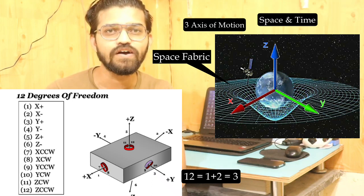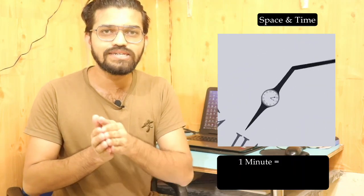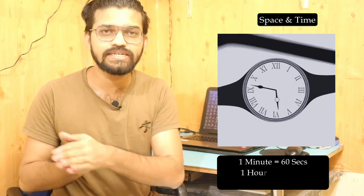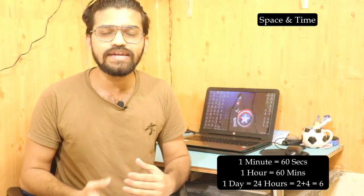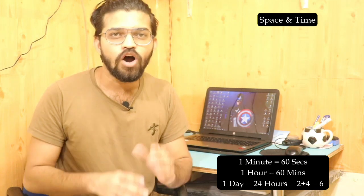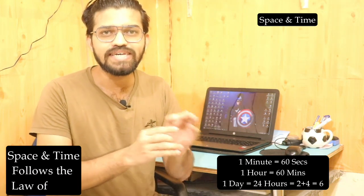If we look at time: one minute consists of 60 seconds and one hour consists of 60 minutes. Why is it always 60? Why not 70, 80, or 90? This is because time also obeys the law of 369. So we can say that both space and time obey the laws of 369, and you can see traces of this in string theory as well.